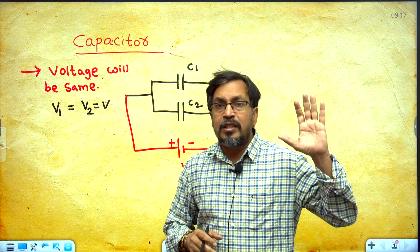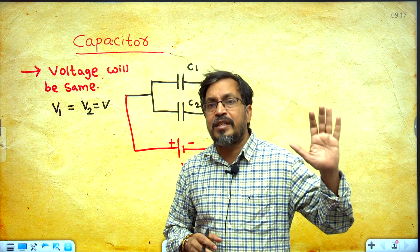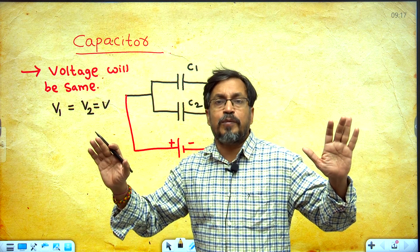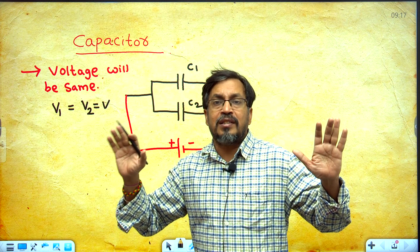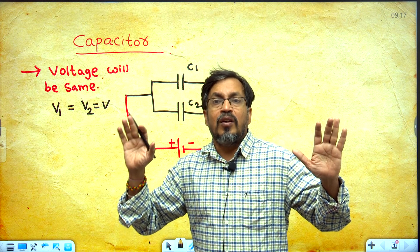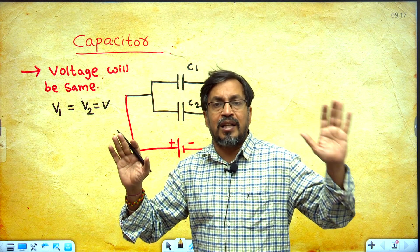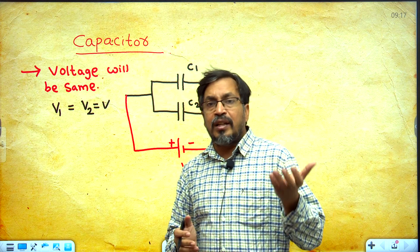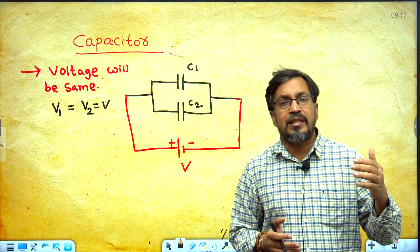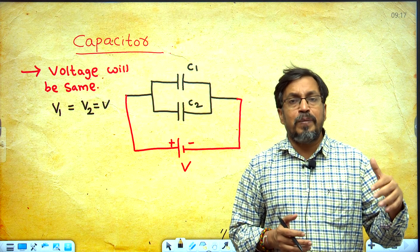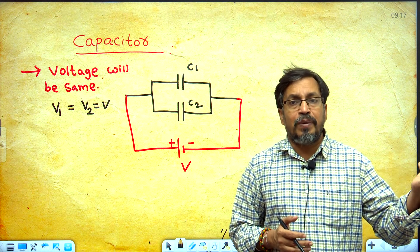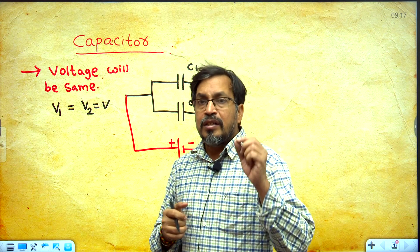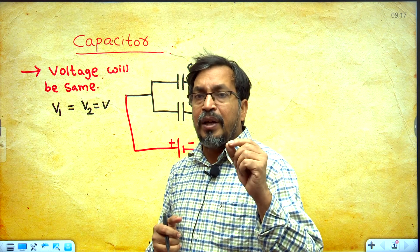So why is voltage the same? Charge will be same when the two capacitors are in series. When the two capacitors are in parallel, voltage will be same. In series: charge same, voltage divided. In parallel: voltage same, charge divided.